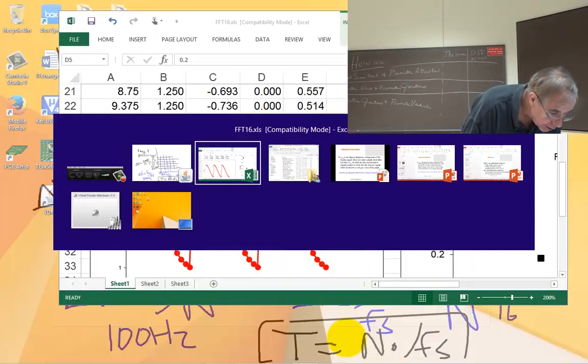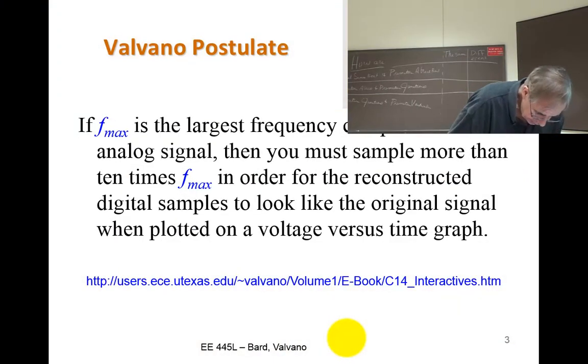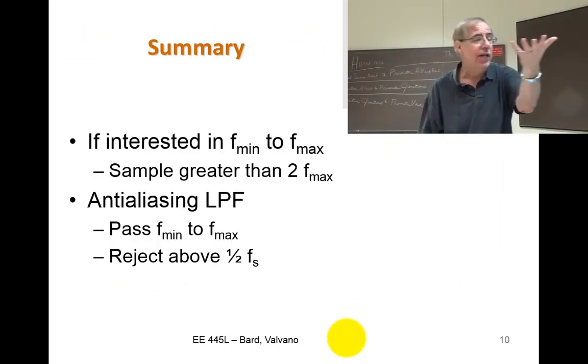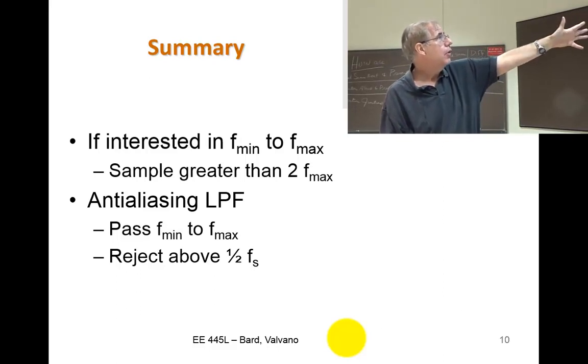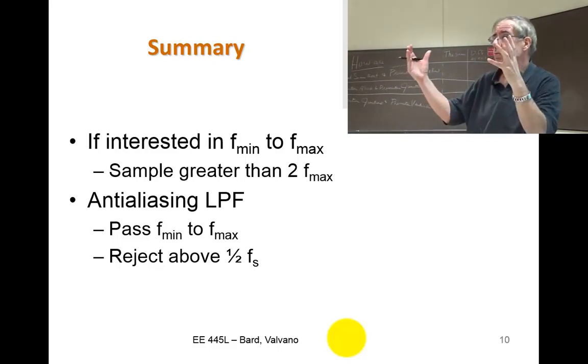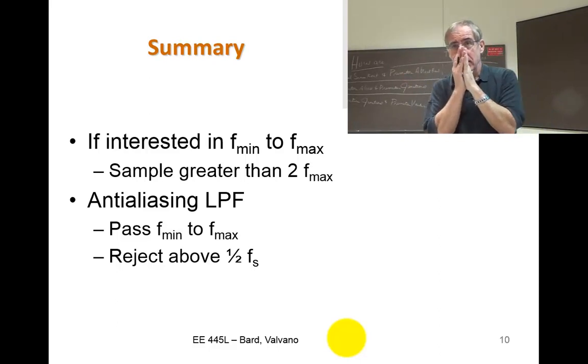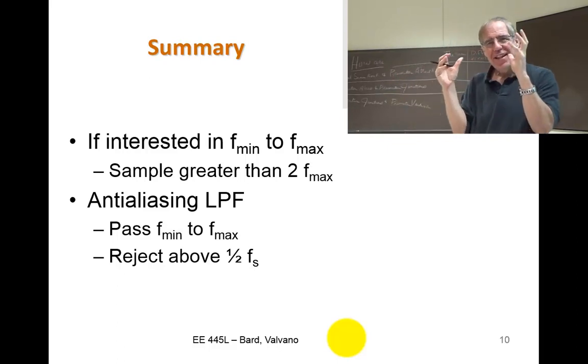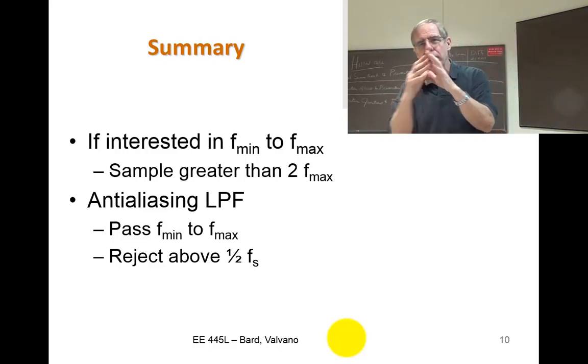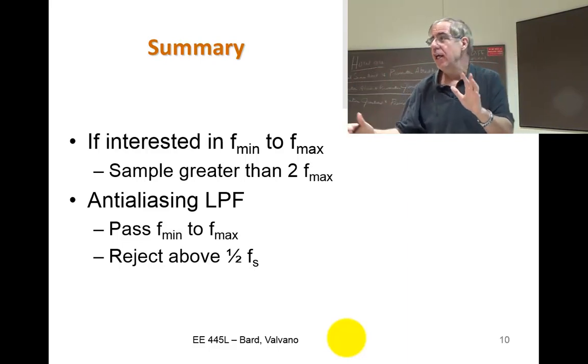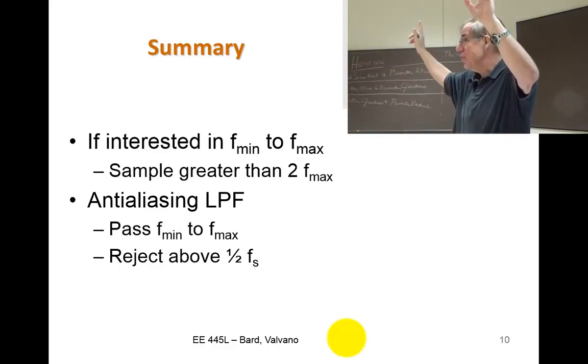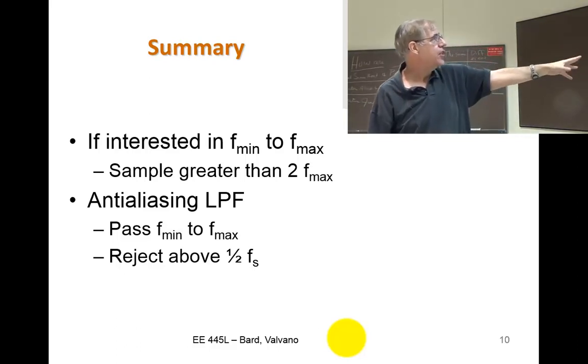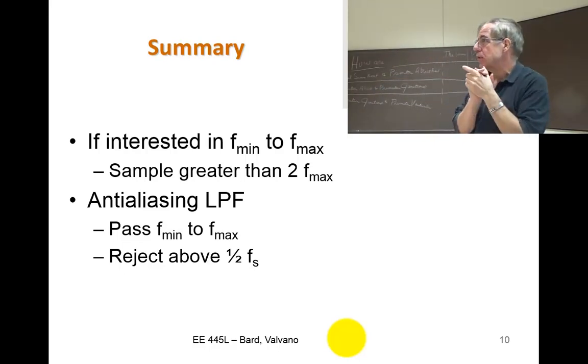Let's just summarize. In summary, the Nyquist rule says that if you're interested in F minimum to F maximum, please sample bigger than twice F maximum. If you put in a low-pass filter, that means that you can reconstruct everything about that signal. If you sample long enough, you can reconstruct everything about that signal. And that low-pass filter has to pass your signals of interest and reject.